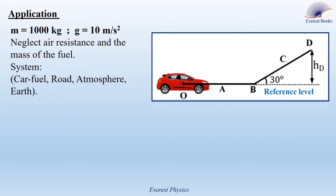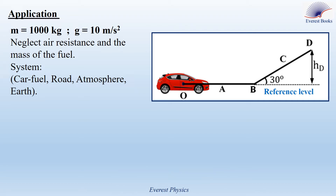In this problem, we study the motion of a car along the track O, A, B, C, D. A car taken as a particle of mass 1000 kg starts moving on the horizontal road from point O. We take the gravitational acceleration as 10 m/s². We neglect air resistance and the mass of the fuel. We consider the system: car, fuel, road, atmosphere, earth. We take the horizontal plane containing O as a reference level for gravitational potential energy.